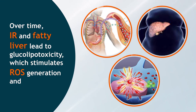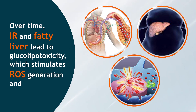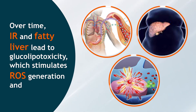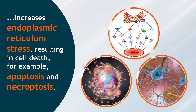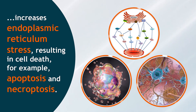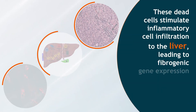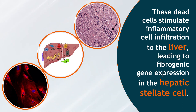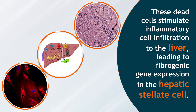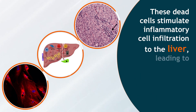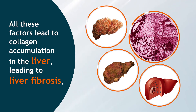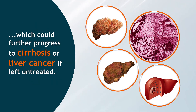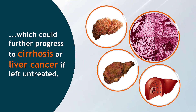On a hepatocellular level, IR has been associated with abnormal lipid handling, leading to fat accumulation in hepatocytes causing fatty liver. Over time, IR and fatty liver lead to glucolipotoxicity, which stimulates ROS generation and increases endoplasmic reticulum stress, resulting in cell death — for example, apoptosis and necroptosis. These dead cells stimulate inflammatory cell infiltration to the liver, leading to fibrogenic gene expression in hepatic stellate cells, causing collagen accumulation, liver fibrosis, and potentially cirrhosis or liver cancer if left untreated.